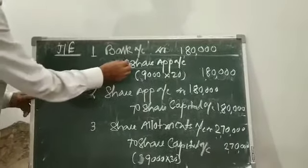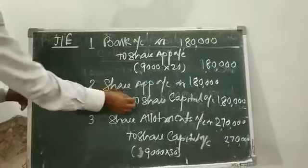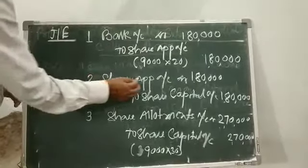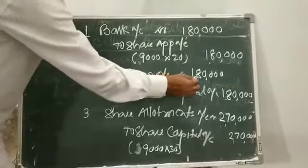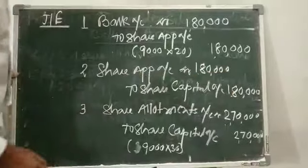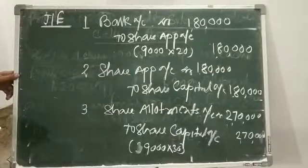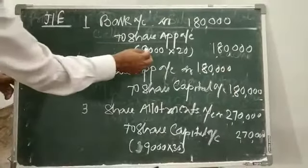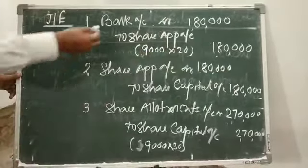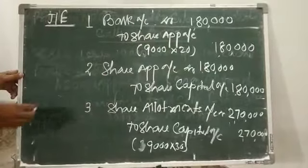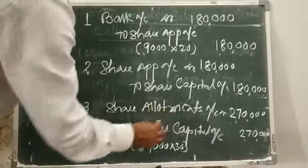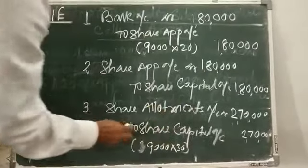Next entry: Share Application Account to Share Capital Account. We transfer the application money to share capital. Again Rs. 1,80,000 — that is 9,000 shares into Rs. 20 equals Rs. 1,80,000.